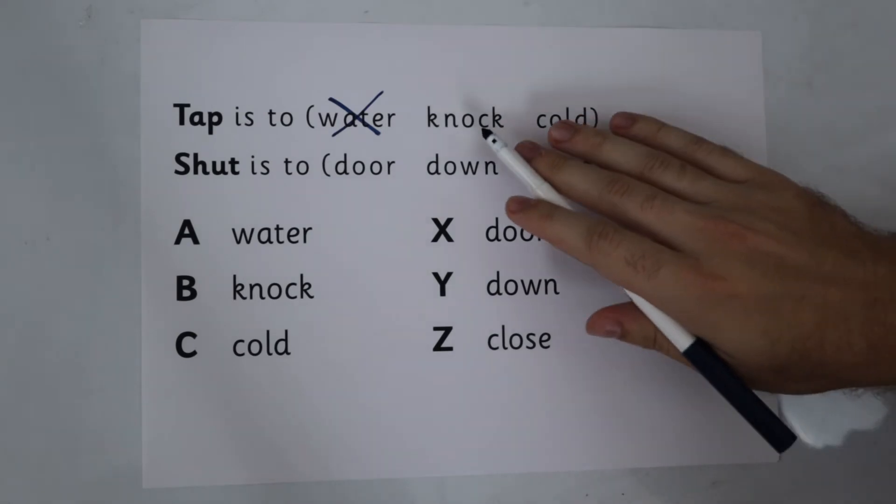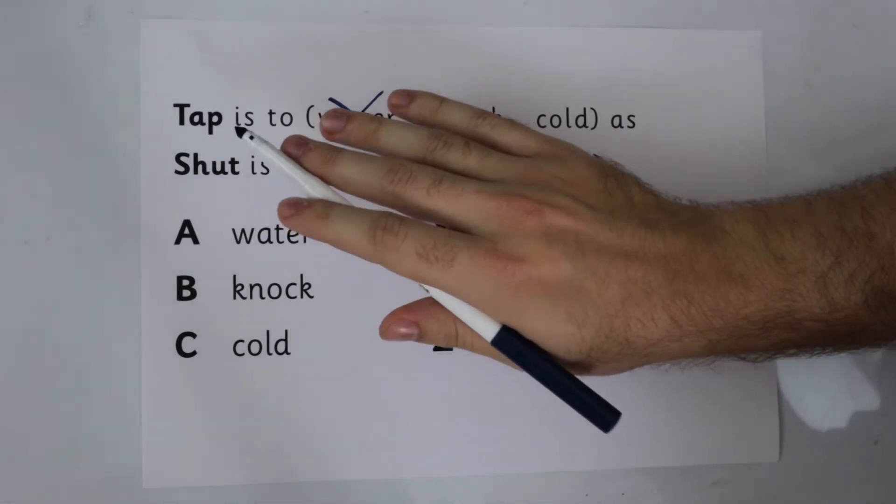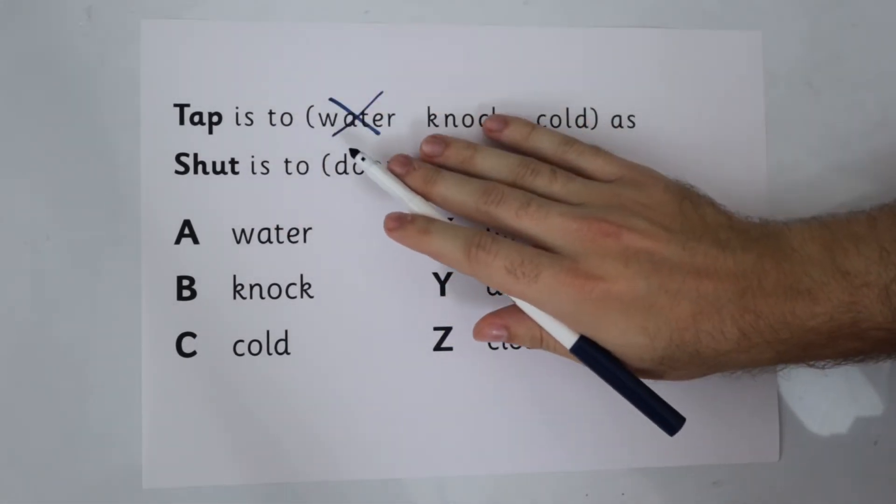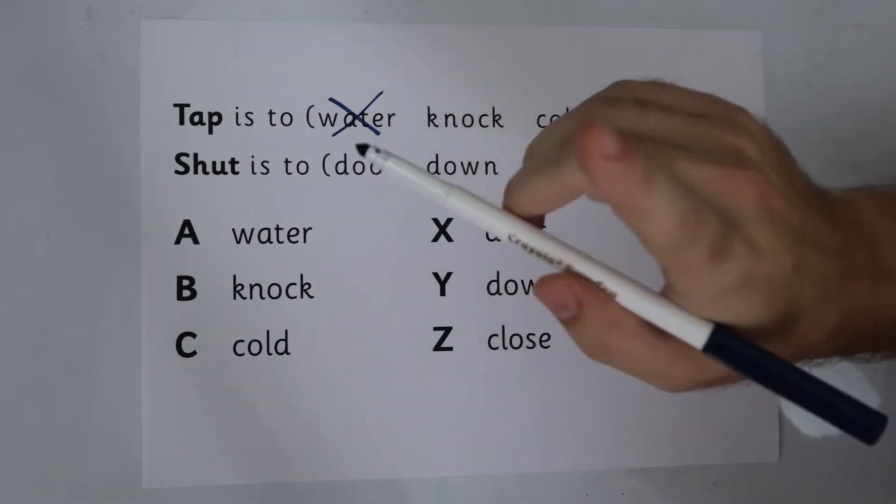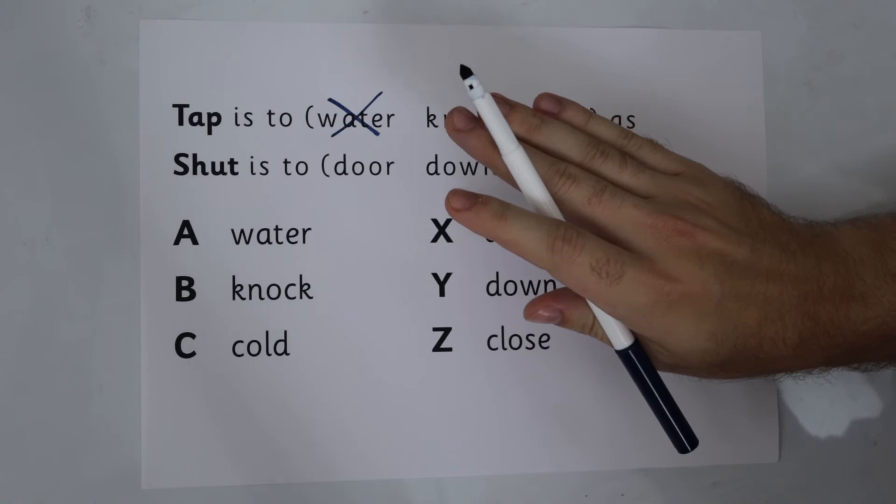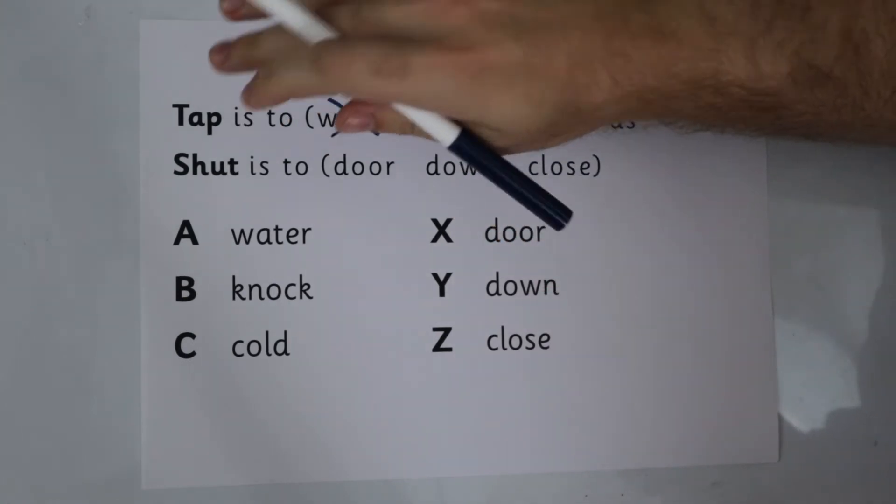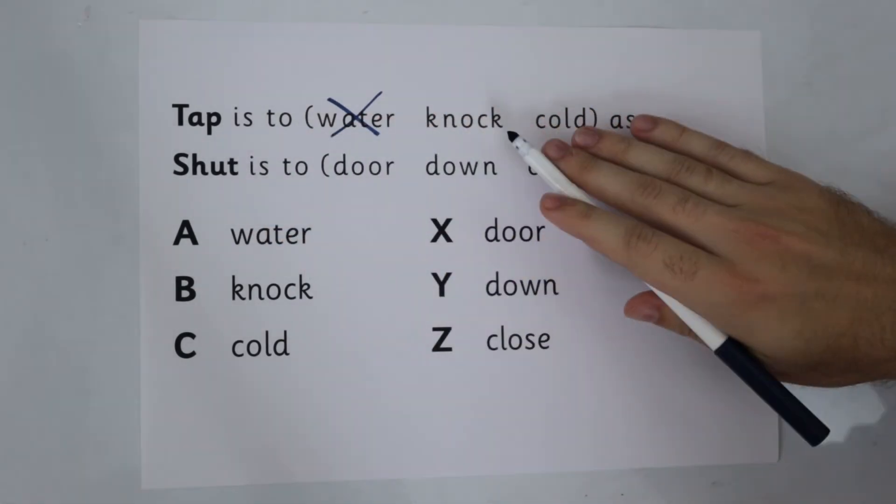The second option is knock. Now here is a classic Kent Test trick. Tap has two meanings. The initial meaning we looked at was a tap as in with a sink and water comes out of it, but tap can also mean a knock. So in this part of our question answering, we're going to imagine tap as a little tap on the door or a knock on the door.